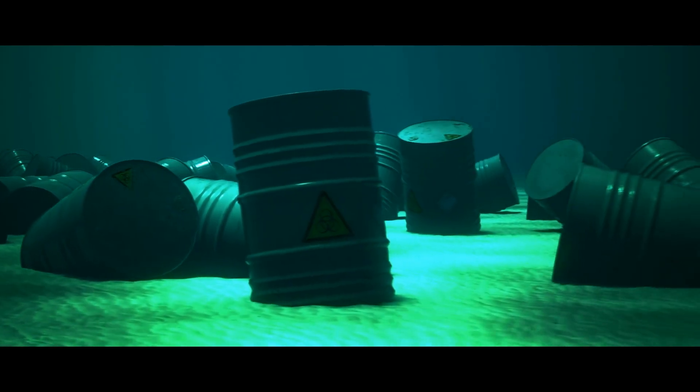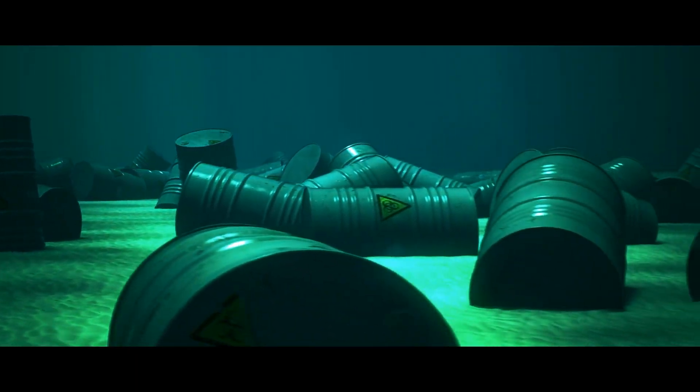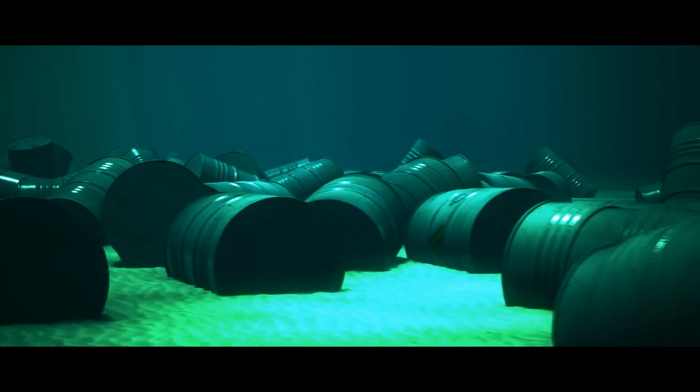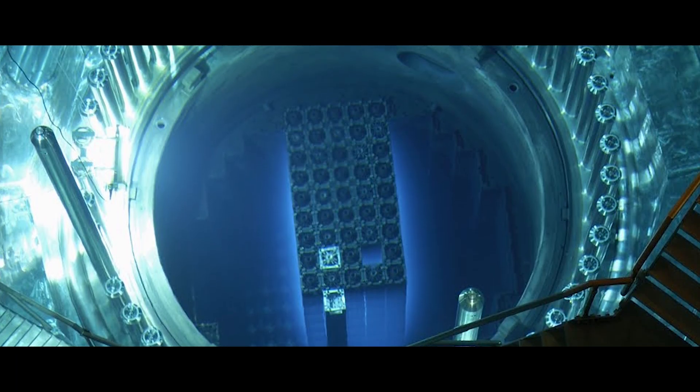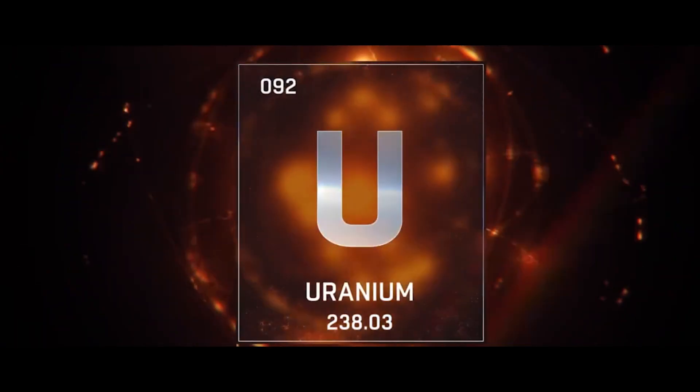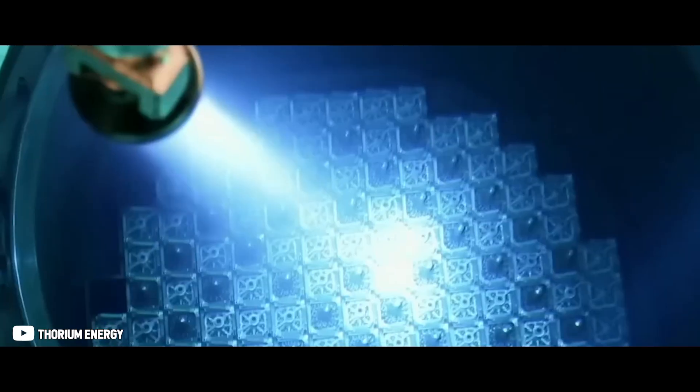A thorium molten salt reactor can integrate nuclear waste by using the highly radiotoxic plutonium and other actinides from spent fuel to kick-start the reactor. As the reactor operates, it not only produces energy but also transmutes nuclear waste into less problematic isotopes. Simultaneously, thorium in the reactor is converted into fissile uranium-233, further fueling the reactor and generating energy.